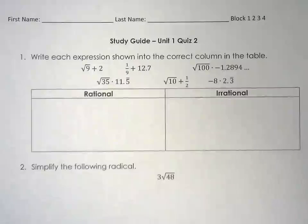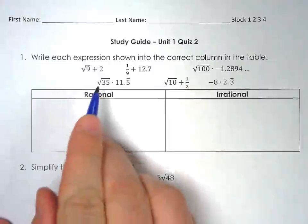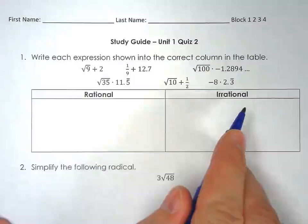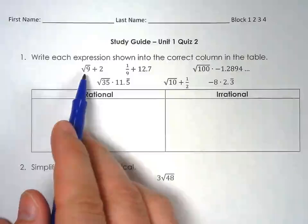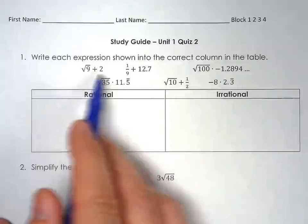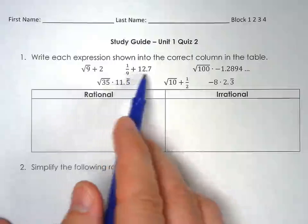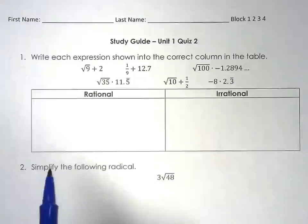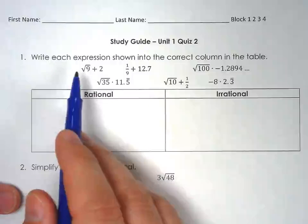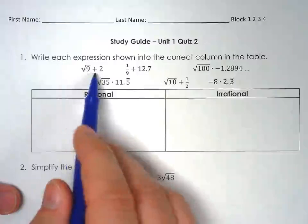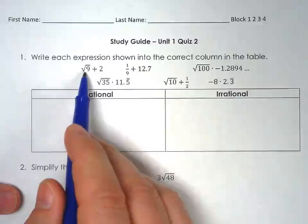Number one says write each expression shown into the correct column in the table. So notice we have two columns here. We have a rational column and an irrational column. Once we look at our equations up here, we have square root of 9 plus 2, 1 over 9 plus 12.7, and so on and so forth. So what we need to do is in order to find out if it's rational or irrational, you have to go in and look at each individual one. So like this, radical 9 plus 2.